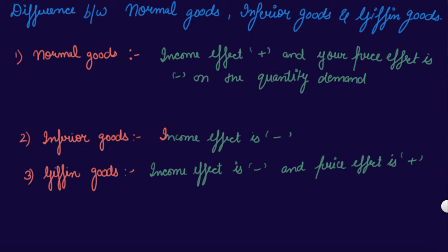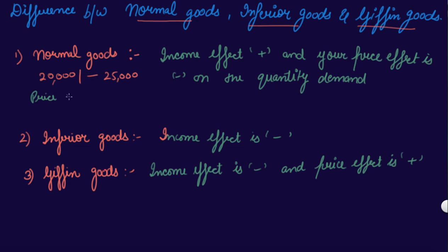In this video we will understand the difference between normal goods, inferior goods, and Giffen goods. Normal goods are those goods whose income effect is positive on the quantity demanded and price effect is negative on the quantity demanded. This means if your income increases from twenty thousand per month to twenty-five thousand per month, you will be demanding more of these goods — be it apparels, daily usage goods, or anything. The price effect is negative, meaning if the price increases, your quantity demanded decreases — there is an inverse relationship.